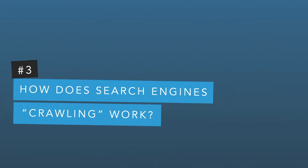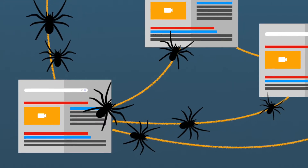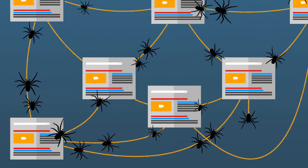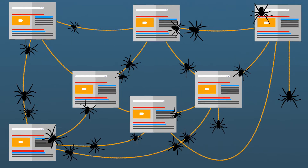So how does search engine crawling work? Search engines send out multiple robots online — also referred to as spiders or crawlers — to identify new and updated pieces of content. These bots start on a few web pages and then follow the links they find to discover new URLs. Once identified, these new pages are ranked and added to the giant database, also referred to as the index.